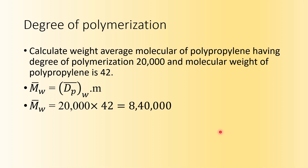Another example based on degree of polymerization: calculate the weight average molecular weight of polypropylene. The degree of polymerization is given as 20,000 and the molecular weight of the propylene monomer unit is 42. The weight average molecular weight is related to degree of polymerization by Mw = DP × M. Substituting: 20,000 × 42 = 840,000.